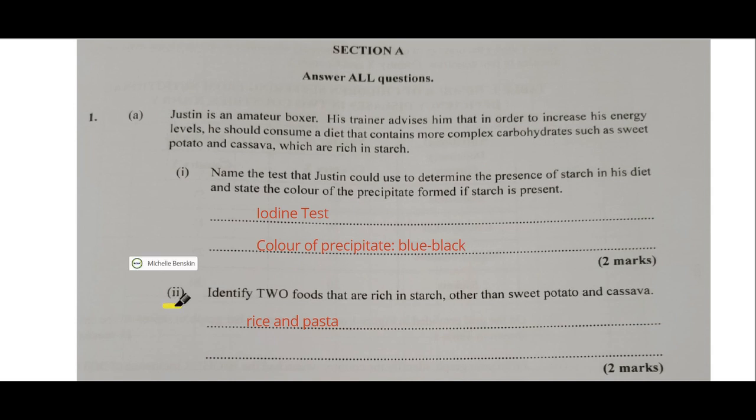Part 2: identify two foods that are rich in starch other than sweet potato and cassava. I have rice and pasta, but you have a number of options. You can also mention other ground provisions — English potato, eddas, things like that. You also have cereals, oats, and bread. Those are a number of other food options that are rich in starch.